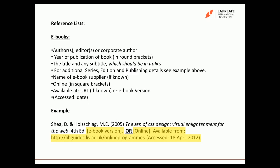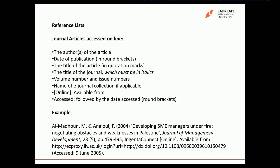For a reference from a journal article accessed online, the author's names come first, then the year of publication. However, it's not the title of the article but the title of the actual journal that should be in italics — so here 'Journal of Management Development' is in italics. You also need to provide the volume number and issue number if applicable, the name of the e-journal collection if applicable — here 'Ingenta Content' — and then indicate it was online, available from the URL, accessed on the date, in this case 9th of June 2005, always in close brackets.